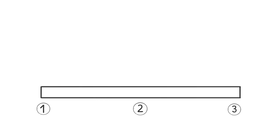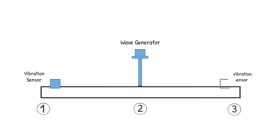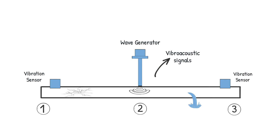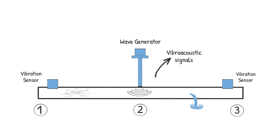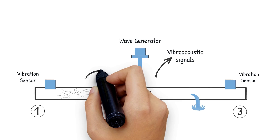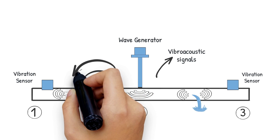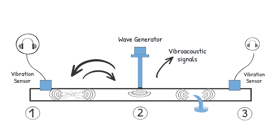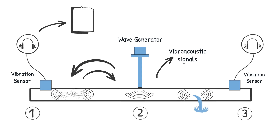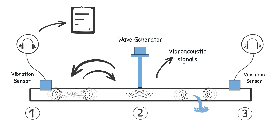During a DRI inspection, three access points are used with a wave generator placed between two vibration sensors. One: vibroacoustic signals are introduced into the pipeline at the wave generator. Two: the pipeline will then become excited and will vibrate at frequencies that are relative to the localized wall stiffness. Three: these frequencies are then recorded and pinpointed using a correlation function.